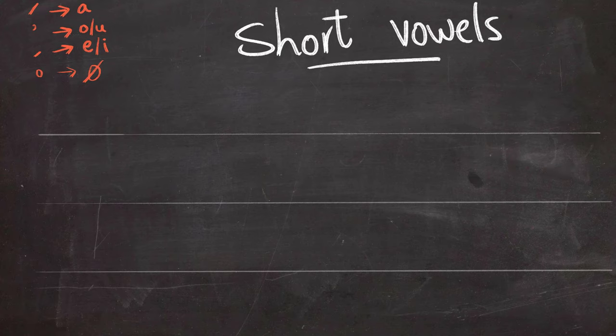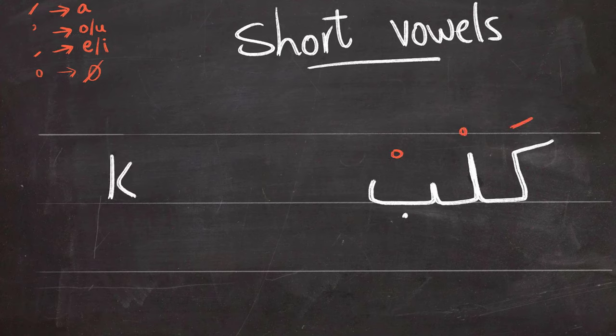Another example to highlight the sukoon. The word kalb. Kalb means dog. As you can see there's just one short vowel at the beginning of the word.